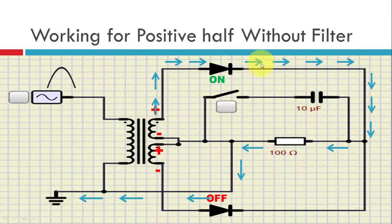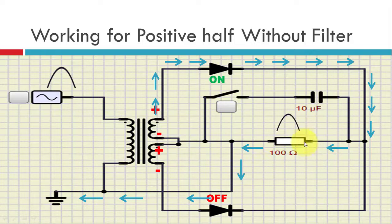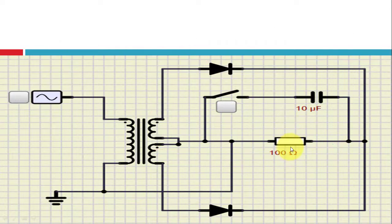The upper diode starts conducting, and as we can see with this blue arrow, this is the path of the current. So we get the output at the resistor — this 100 ohm resistor. This is during the positive half.